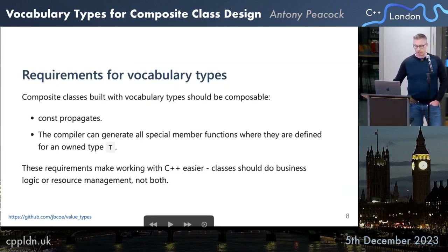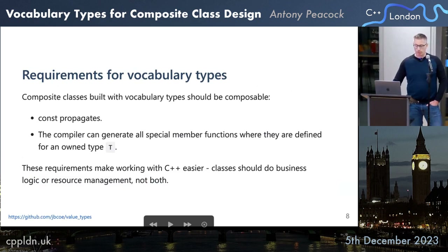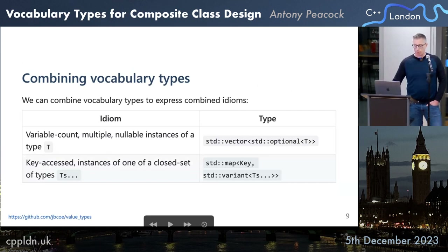Composite classes built with vocabulary types should be composable. You want const to propagate and the compiler should be able to generate all the special member functions where they're defined for an owned T — so we get the rule of zero. These requirements make working with C++ easier. Classes should do business logic or resource management, but never both. We can combine vocabulary types to express combined idioms, such as std::vector<std::optional<T>> or std::map<Key, std::variant<TS...>>.